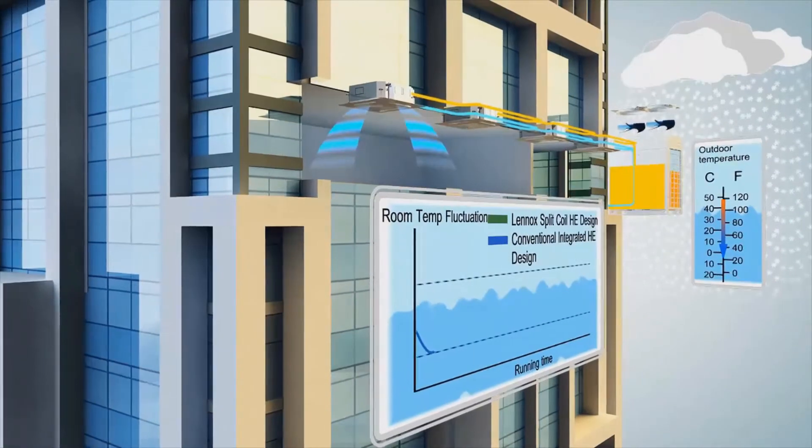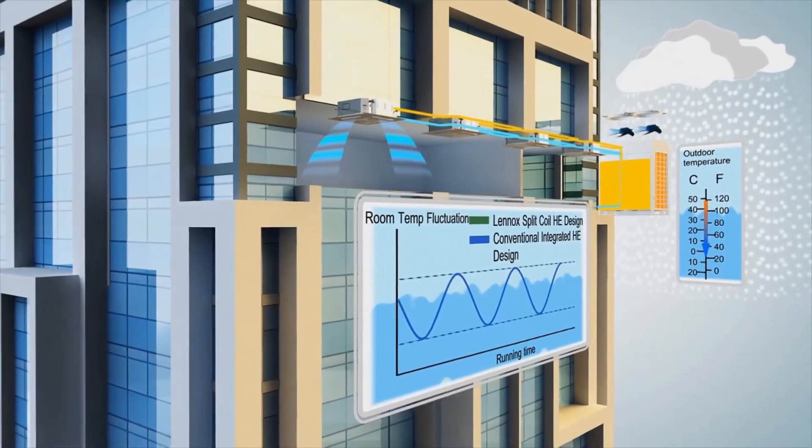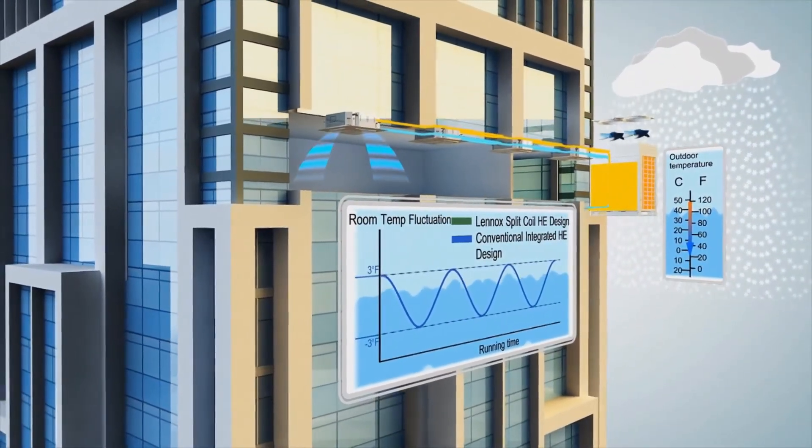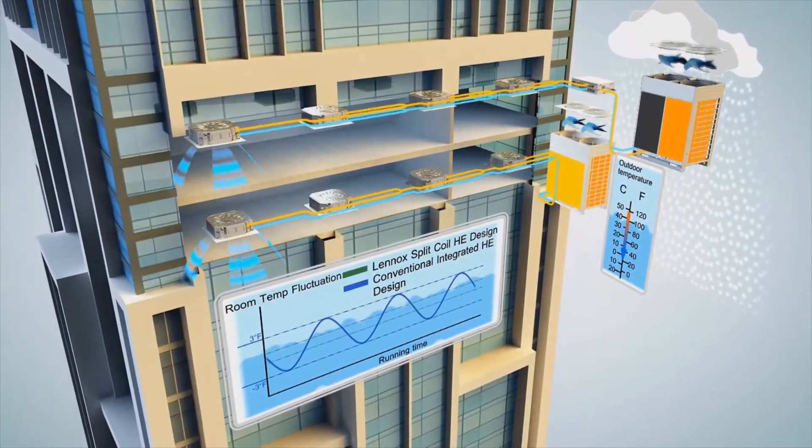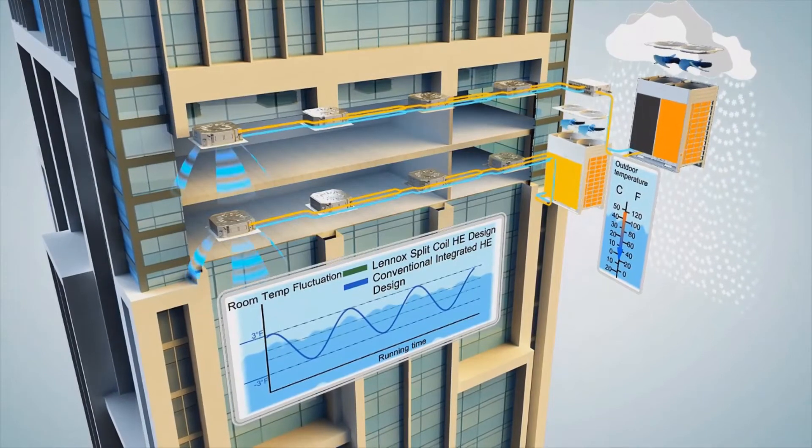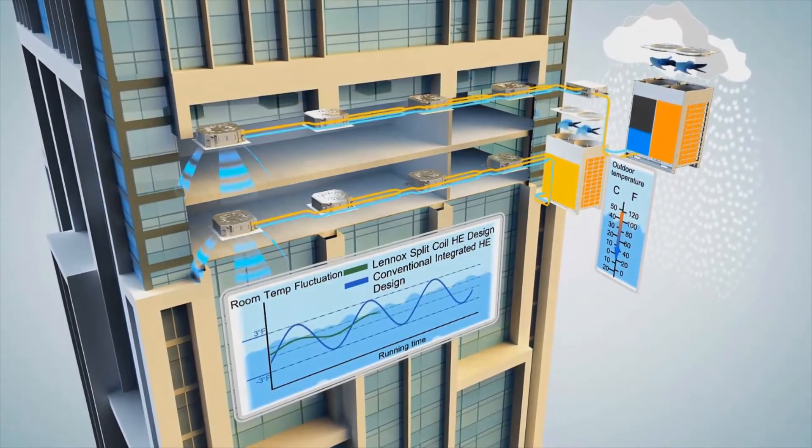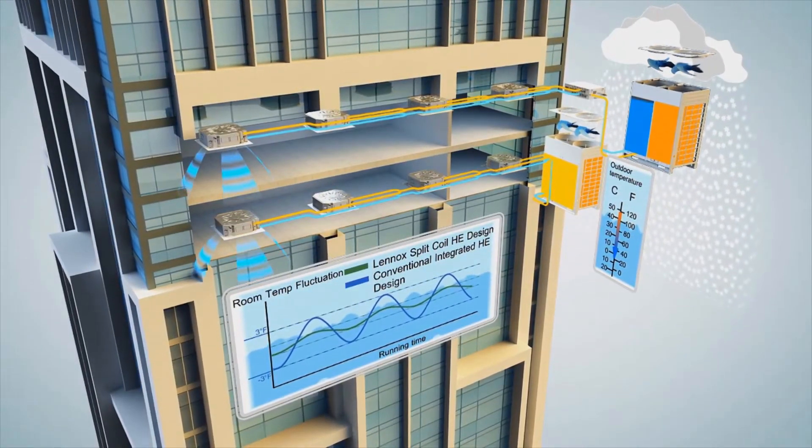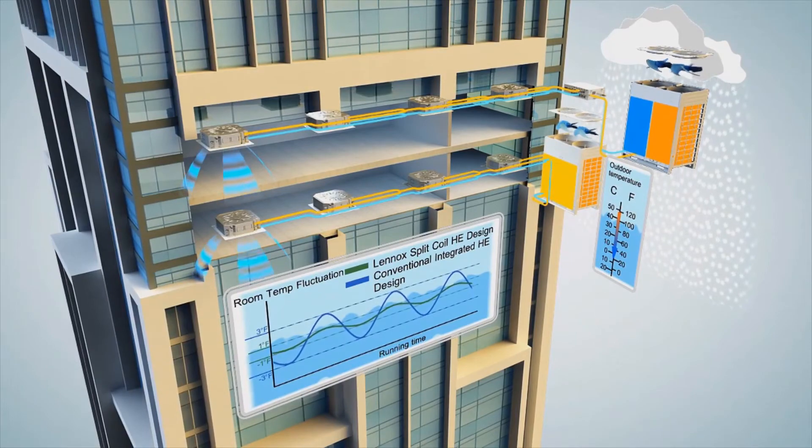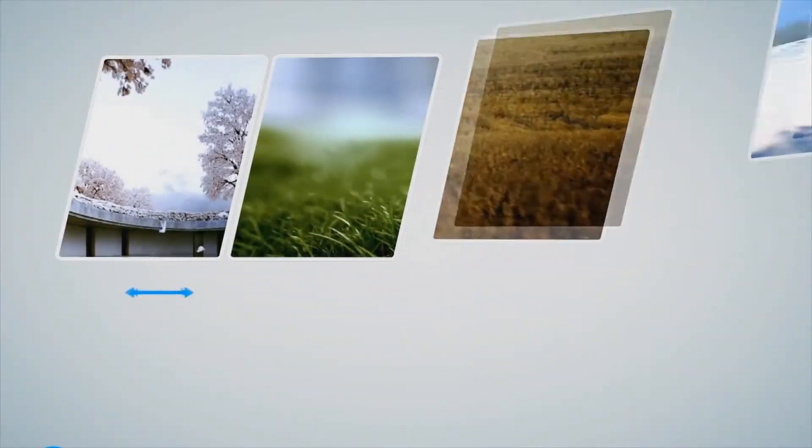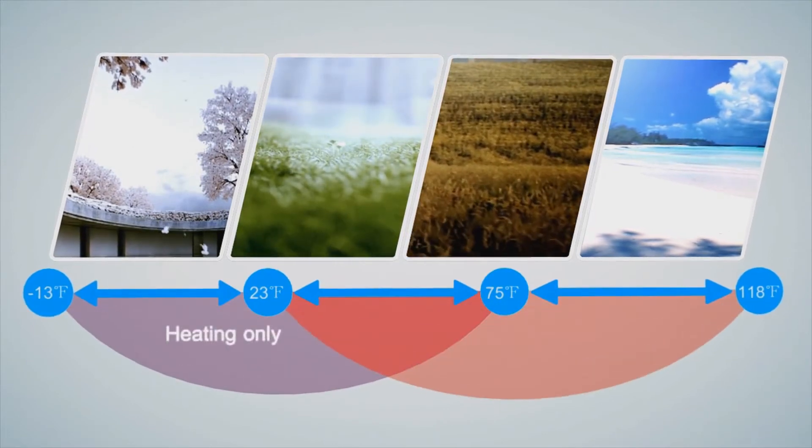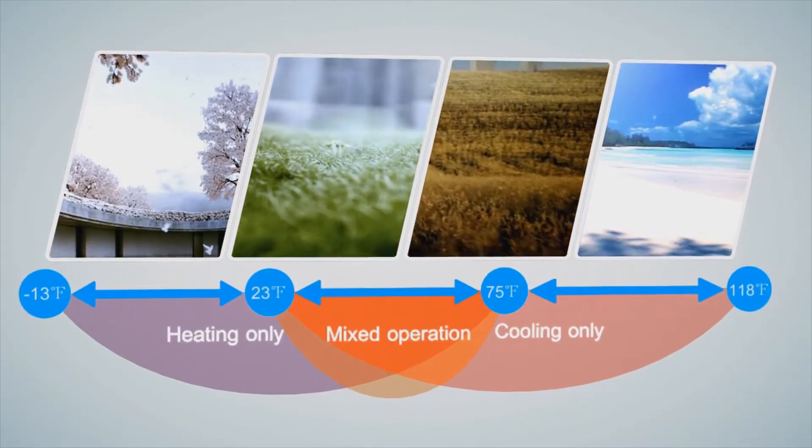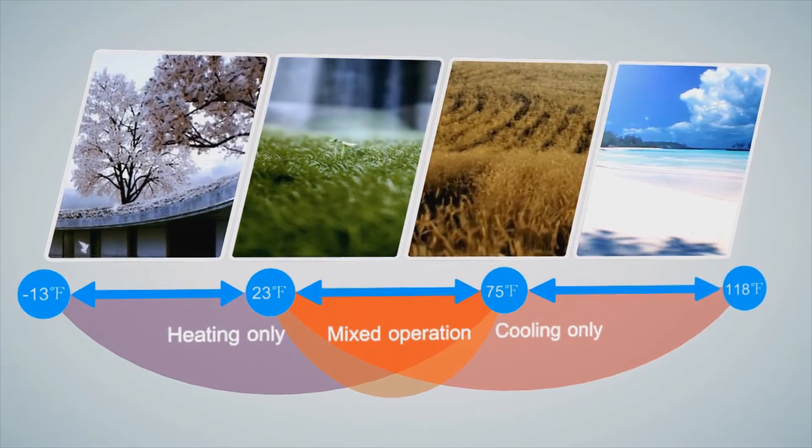At low ambient temperatures and part load operation, a standard integrated heat exchanger design may cause significant room temperature fluctuations in cooling mode. The Lennox VRF split coil design stabilizes system operation by balancing the condensing and evaporating capacities. Whether in the cold of winter or heat of summer, the Lennox VRF heat recovery system ensures a comfortable indoor environment year-round.